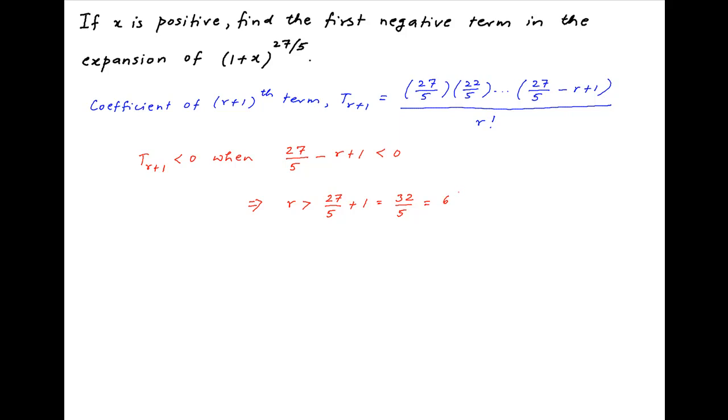32 upon 5 is equal to 6 whole 2 upon 5. Therefore, the smallest integer value of r such that the coefficient of the r plus 1th term is less than 0 is r is equal to 7.